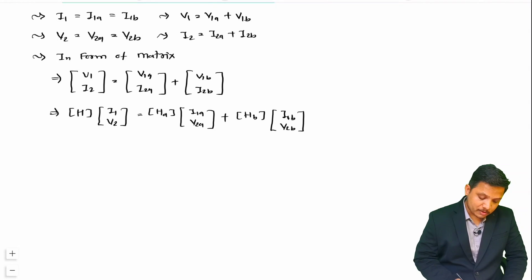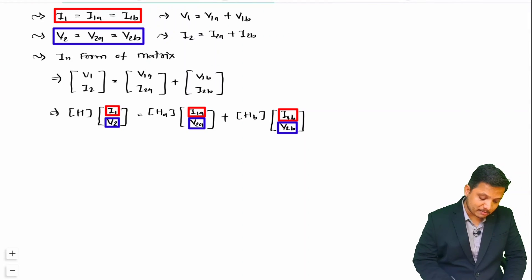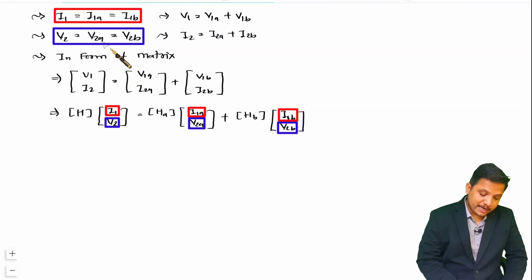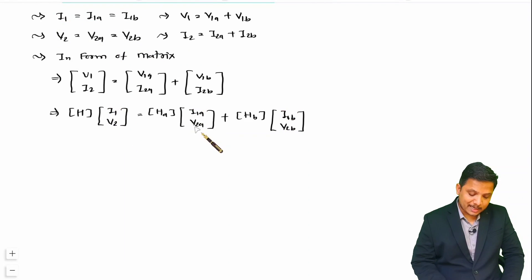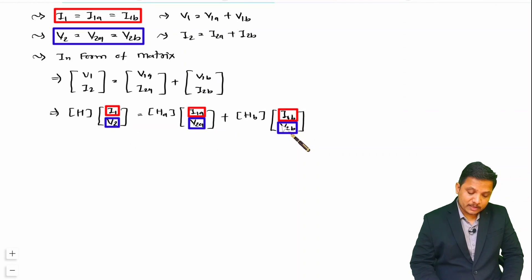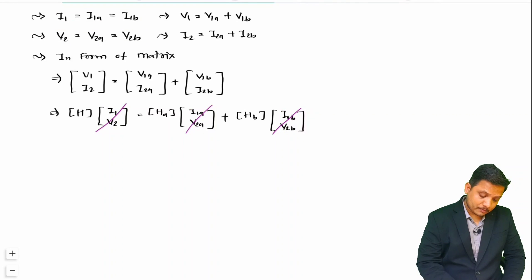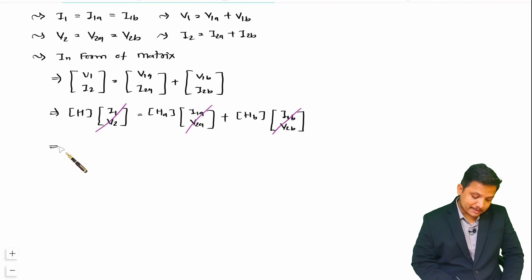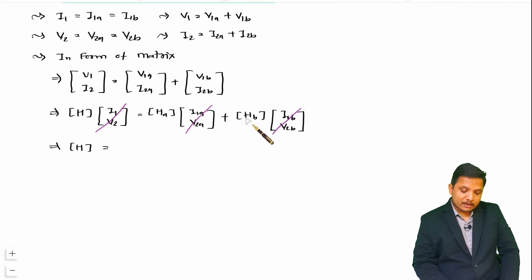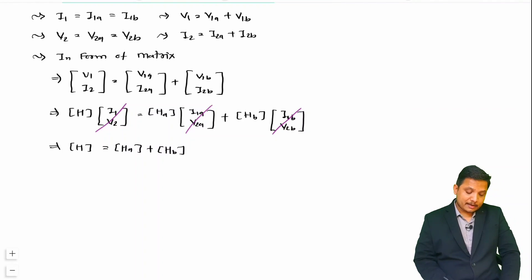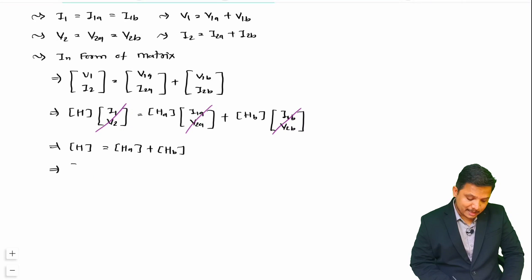Now observe that I1 equals I1A equals I1B, and also V2 equals V2A equals V2B. This means the [I1, V2] matrix is the same on both sides. So I can cancel this matrix from both sides, and we are left with a simplified H matrix which is the resultant of network A and network B — that is H_A plus H_B.